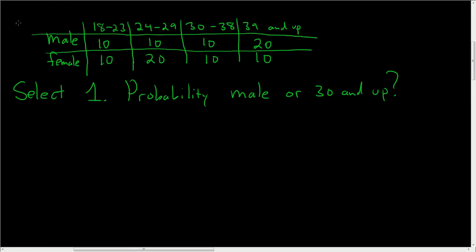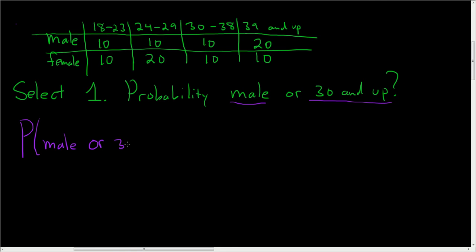We have this table and we're going to select one result at random from it. We want the probability that our selection is male or 30 and up.